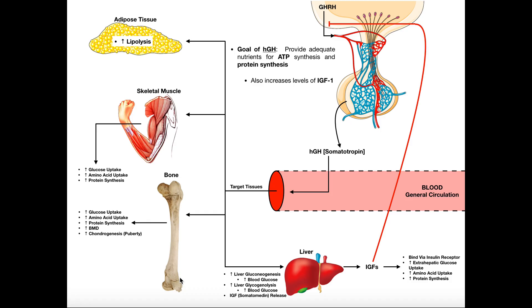Overall, what growth hormone is doing is: through adipose tissue and liver it increases the amount of circulating nutrients, and then those nutrients are taken up by cells like skeletal muscle and bone. Growth hormone also augments the uptake of those nutrients like glucose and amino acids, and through metabolic pathways we get more ATP, and then we can build more proteins.